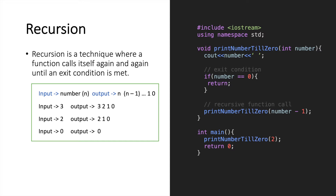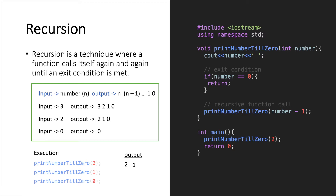Now let's simulate an actual example through this function. Suppose we call the function with the value of number as 2. The first time the function gets executed, the value 2 is printed out, and as the value of number is not equal to 0, the exit condition is not called and we recursively call the function again, passing the value as number minus 1, which is 2 minus 1 equal to 1. The function again gets called and the number 1 is printed. The exit condition is not met, so we again call this function with the value 0. Now the value 0 is printed, and when we check the exit condition, the value of number is equal to 0. Therefore, we return out of this function, which breaks the recursive call loop and our program has successfully executed.